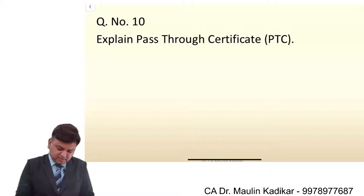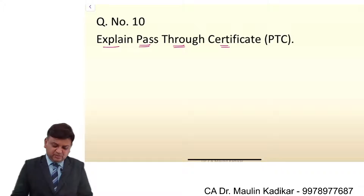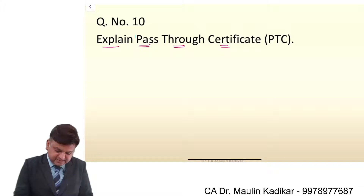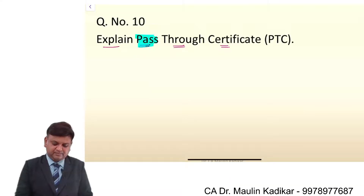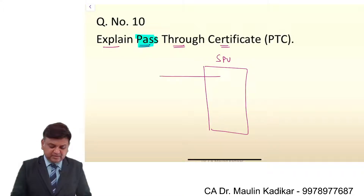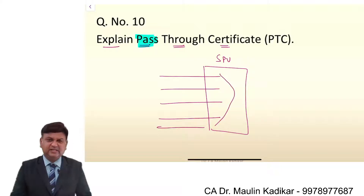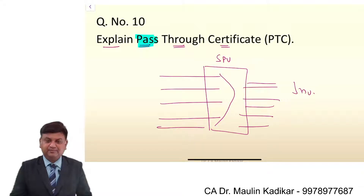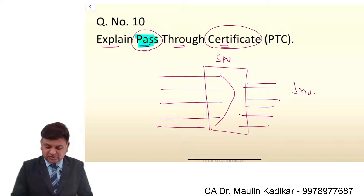This is an important question: explain pass-through certificate. The word 'pass' is important. In case of the special purpose vehicle, the word pass itself indicates that the SPV is working only as an intermediator. Whatever amount it is able to receive from the loans, the same amount is transferred to the investors — that is what we understand as the pass-through certificate.